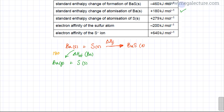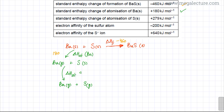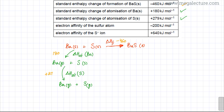The next step: sulfur solid has all atoms bonded together, and we need to get scattered gaseous sulfur atoms by breaking all the bonds. So barium remains as it is in the gaseous state, and sulfur is converted into gaseous atoms. This is the enthalpy change of atomization of sulfur — one mole of gaseous sulfur atoms is formed from its constituent elements. The value is +279 kJ/mol.